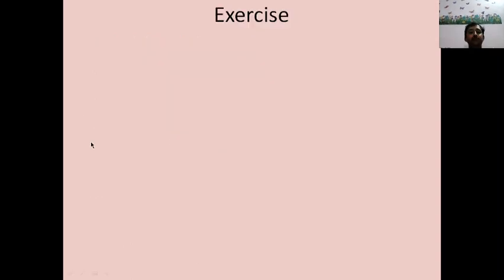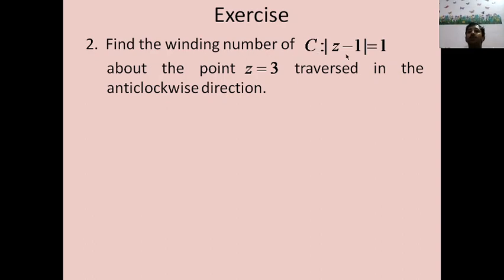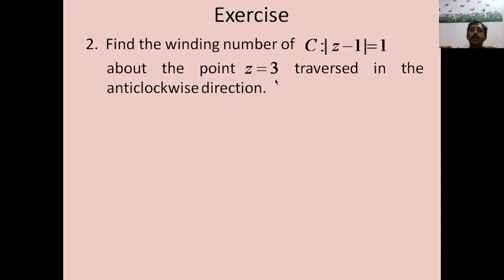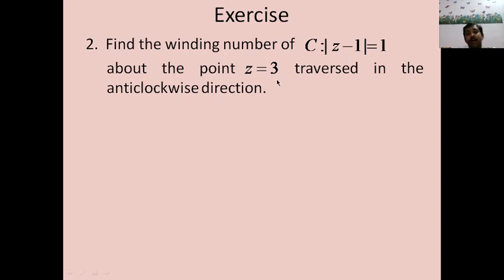Second problem: find the winding number of the curve C: |z − 1| = 1 about the point z = 3, traversed in the anticlockwise direction. Here C is a circle with center z = 1 and radius 1. The point z = 3 is an exterior point of C, so C does not traverse around z = 3 at all, meaning the winding number is expected to be 0.